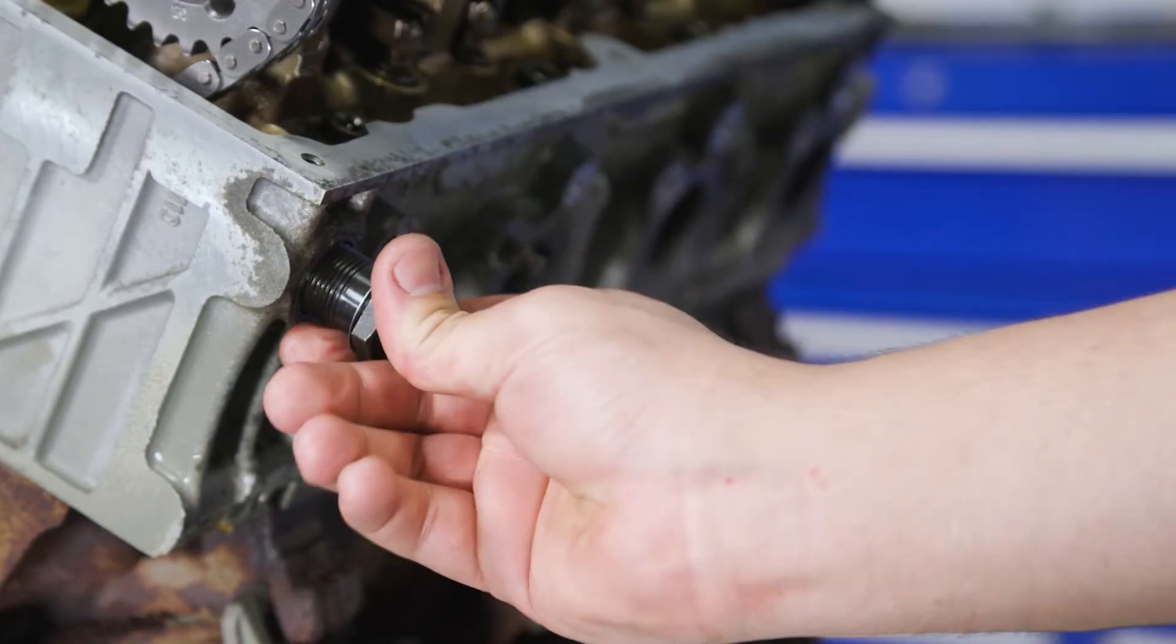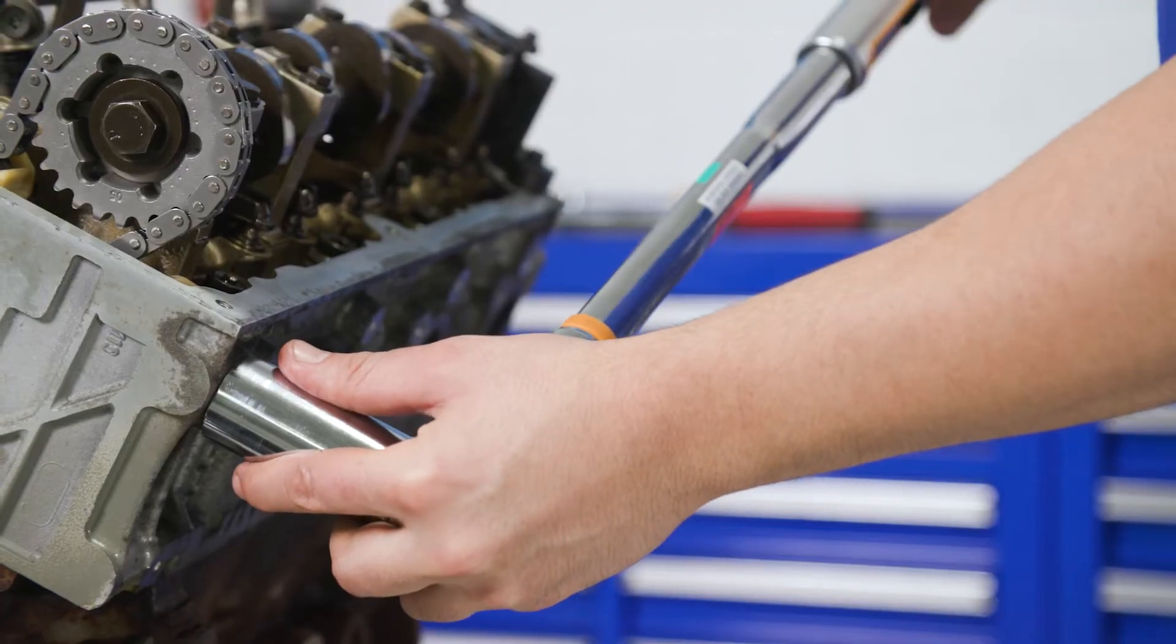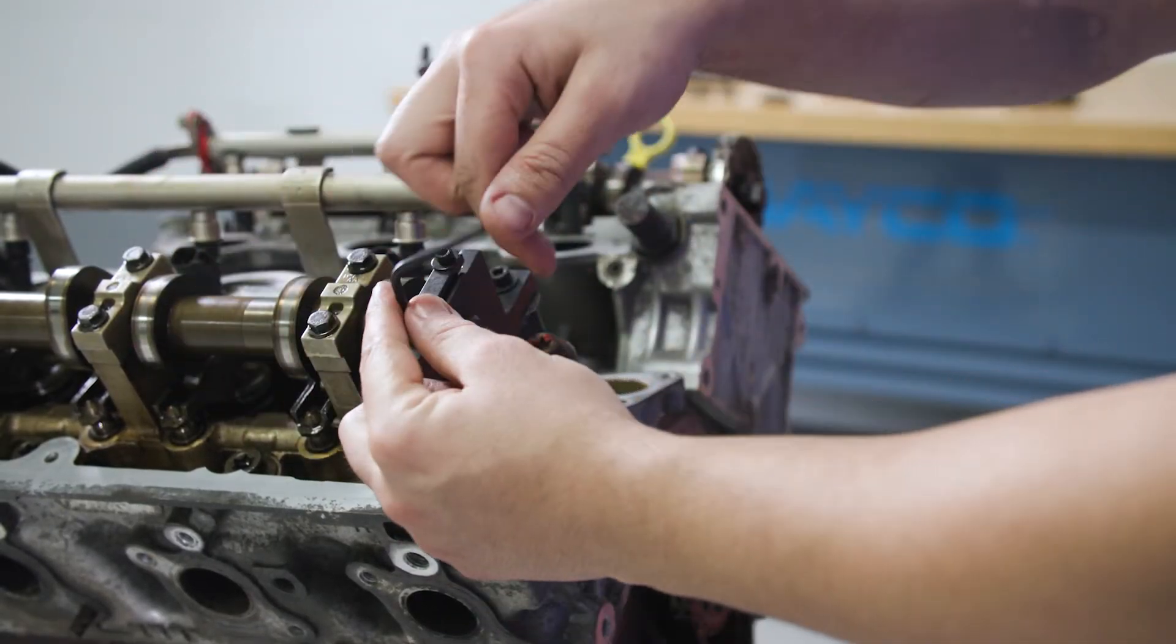Place the new gasket on the hydraulic tensioner to avoid risking an oil leak in the future. Then tighten to 32 foot-pounds. You can remove the camshaft holding tool from the front of the engine.